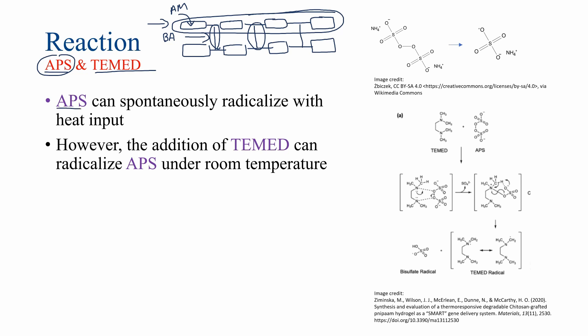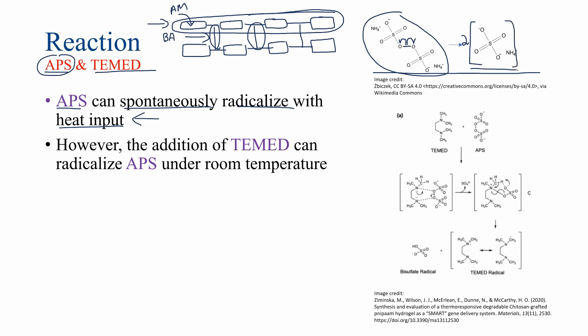APS can spontaneously radicalize with heat input. In the figure at the top, you can see the chemical structure of APS to the left. What will happen if you input heat to APS is that this APS will radicalize. In other words, this bond between two oxygen atoms in APS will result in radicalization by having one electron move to one oxygen and another electron move to the other oxygen, producing two bisulfate radicals. It is this bisulfate radical that plays a role in the polymerization of acrylamide monomers as well as the cross-linking that happens between bisacrylamide and acrylamide polymers.